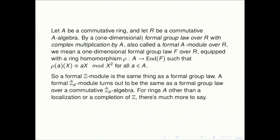So a formal A module is short for 'formal group law with complex multiplication by A.' That's a one-dimensional formal group law over R, where R is the coefficient ring and needs to be an A-algebra — it needs to have an action of A. You ask for a ring homomorphism from A to the endomorphism ring of the formal group law, so a formal A module is a formal group law with an action of A. The compatibility you require is that rho of an element a in A gives rho(a)(X) congruent to aX modulo X squared.